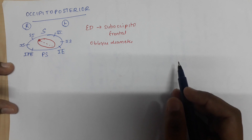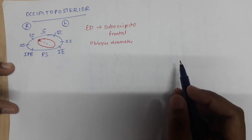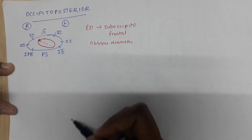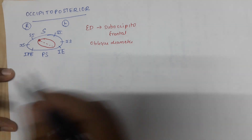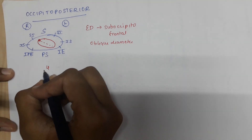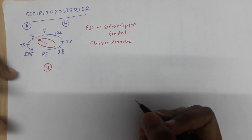In this video, we will focus more on the changes in the head that will occur in case of occipitoposterior position. There are four possibilities.